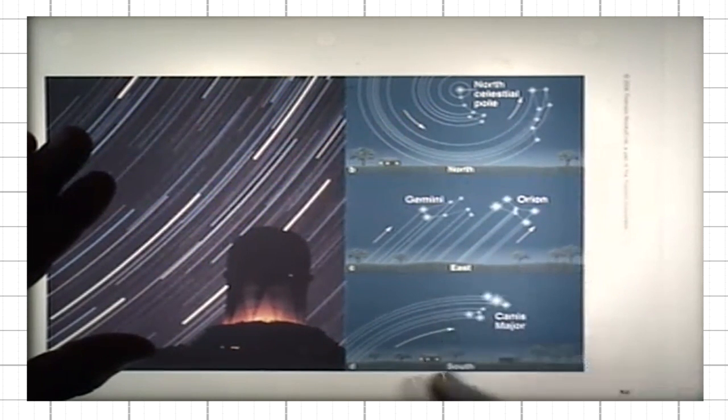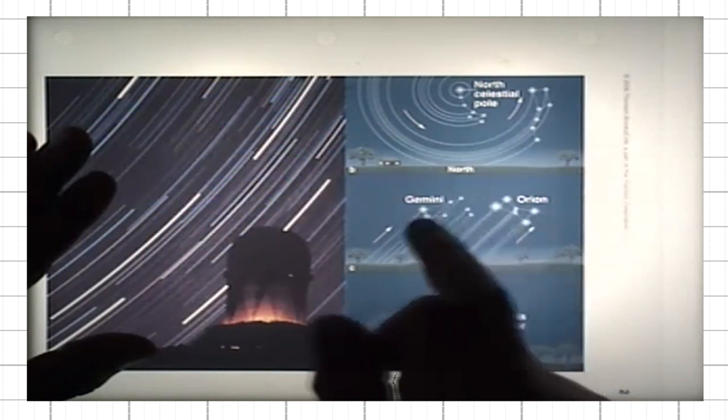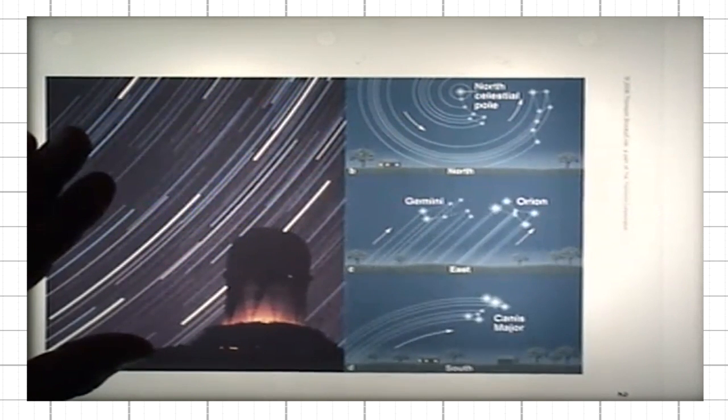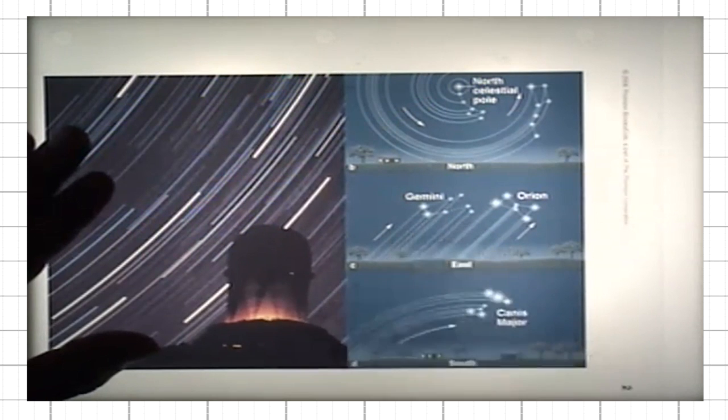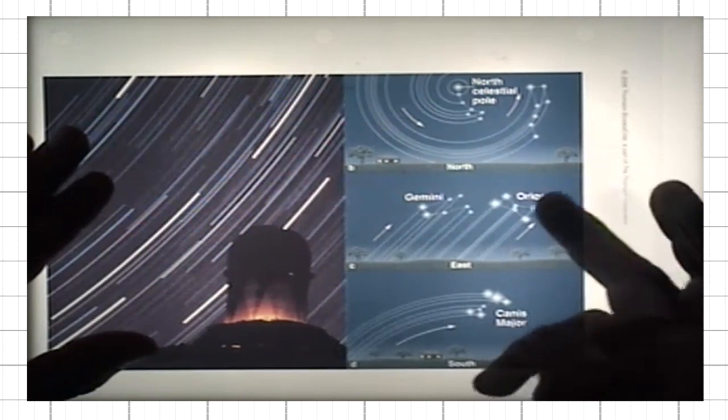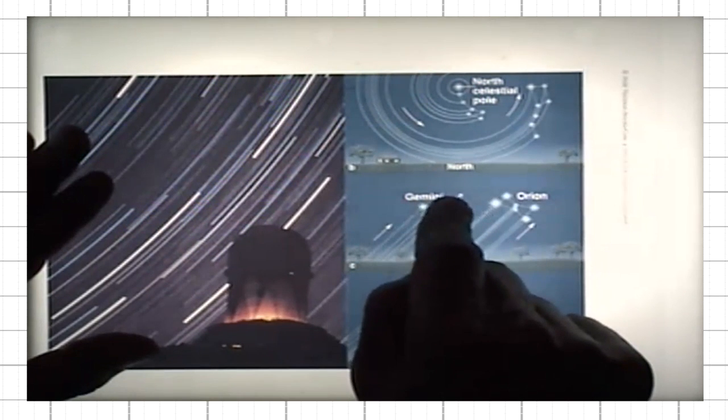If you look towards the east, then you would see, depending on the time of the year whether these constellations are visible or not, that the stars making up Gemini and Orion are rising in the east.